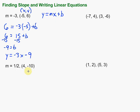A line with a slope of negative 3 through the point negative 5, 6 is this one right here. y equals negative 3x minus 9. Let's take a look at another one. If we're given a slope of 1 half and we want the line to go through the point 4, negative 10, we'll fill in what we're given again into that y equals mx plus b equation.